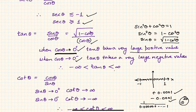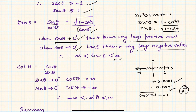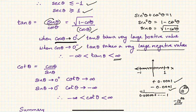Therefore, when cosθ is very small and positive, tan theta tends to positive infinity. When cosθ is very small but negative, tan theta becomes a very large negative number, tending to negative infinity. Also, tan theta can definitely be zero — when sinθ equals zero, tanθ equals zero.